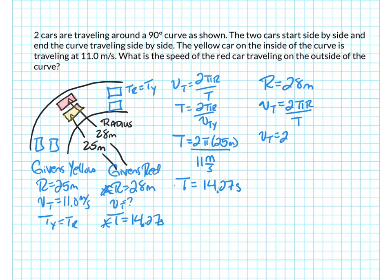2 pi is, I'm sorry, vt is equal to 2 pi 28 meters, divided by the time, which is 14.27 seconds. And that gives me a tangential velocity for the red car of 12.32 meters per second, or 3 sig figs, 12.3 meters per second.